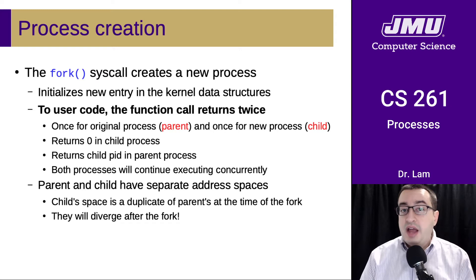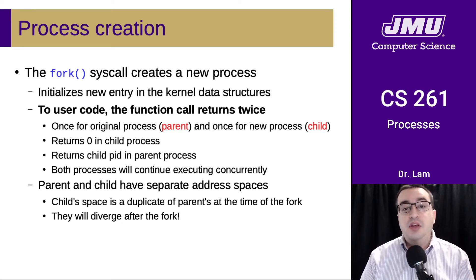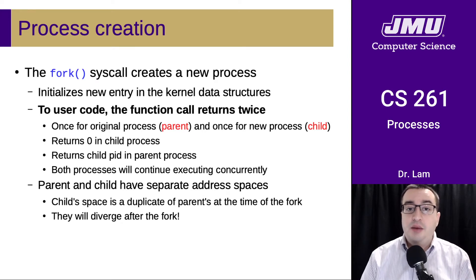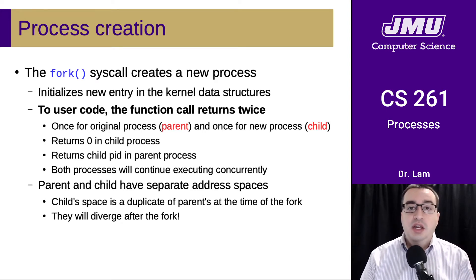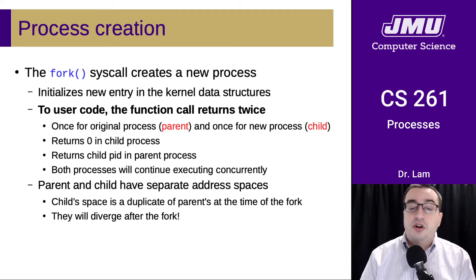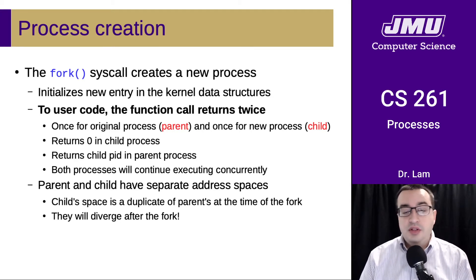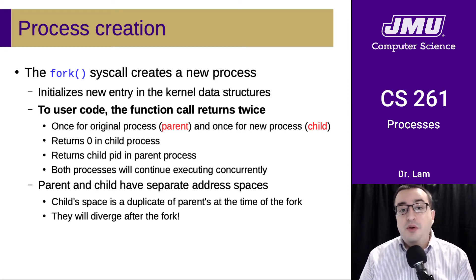They will have separate address spaces at this point. The child's address space is going to be a duplicate of the parent's address space at the time of the fork. So everything in the parent's address space gets copied into the child's address space, but then they will diverge. They are not links to each other — they are completely separate address spaces, and things that were duplicated before will begin to diverge.